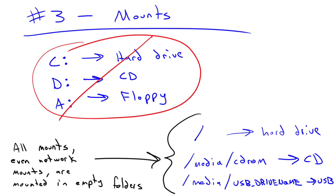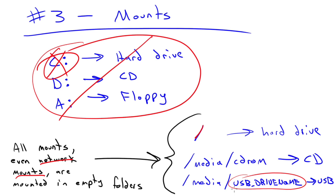Number 3: when you mount a hard drive, floppy, or CD — no more drive letters. It's not C:, D:, A:. All mounted devices, whether USB drives, CD drives, or even network mounts, are just going to be on an empty folder. The root level of your system is just an empty folder where your hard drive is mounted. /media/cdrom is usually where your CD-ROM is mounted, and /media/ followed by the USB drive name is often where USB drives are mounted.